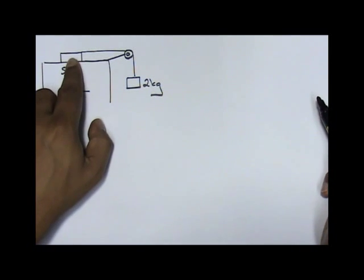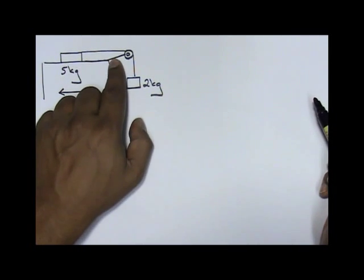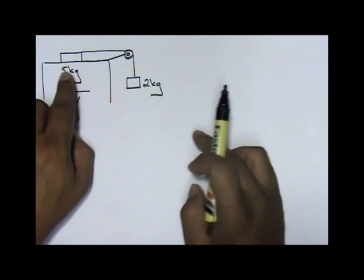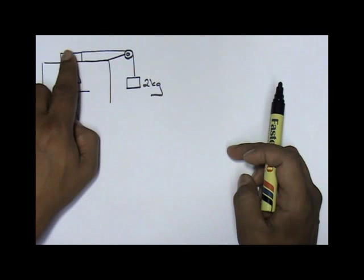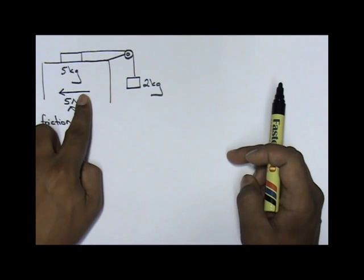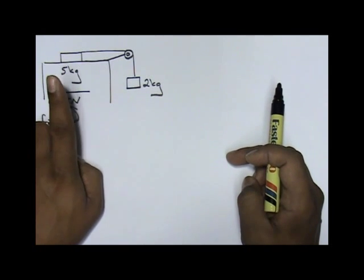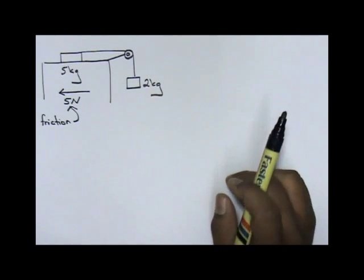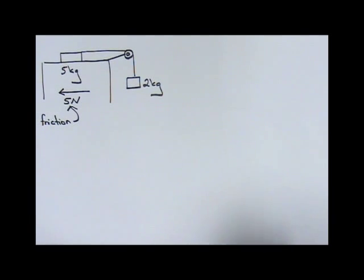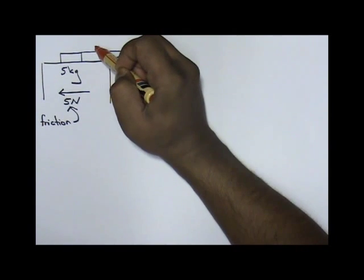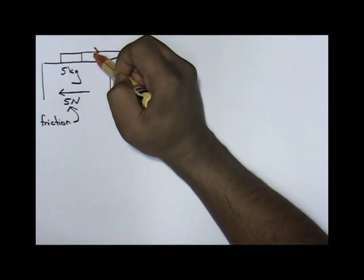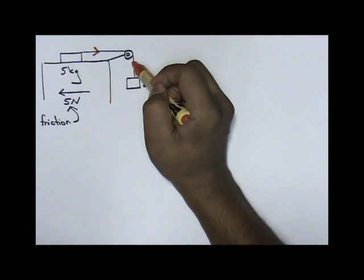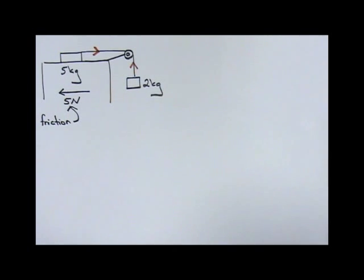The five kilogram wooden block is moving to the right, being pulled by this two kilogram block going down, and a five newton friction is acting on the block. Remember, friction always moves in the opposite direction of the motion. Let's first write the tensions. Tension for the five kilogram block moves in this direction. For the two kilogram, this is the direction of tension.